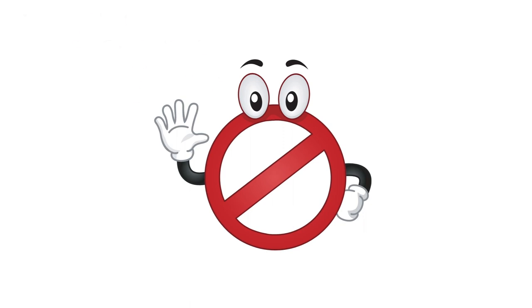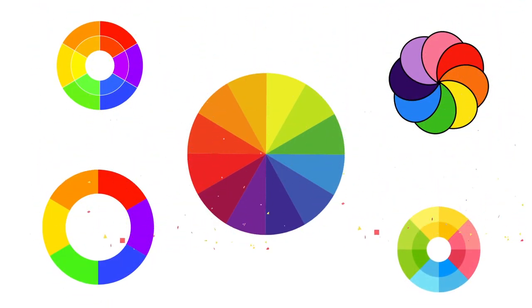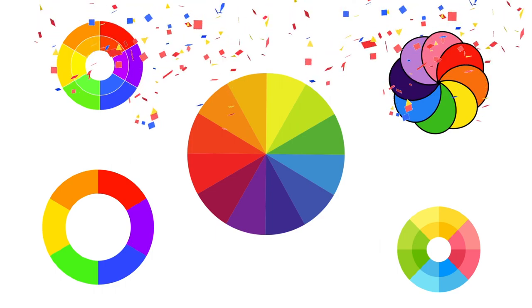Remember, a color wheel is a circle with different color sectors used to show the relationship between colors.